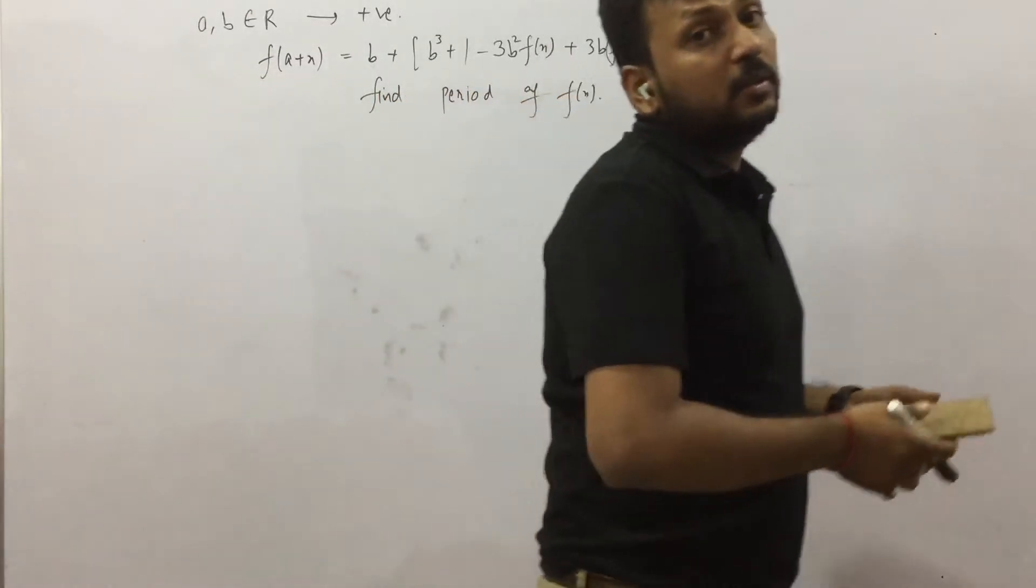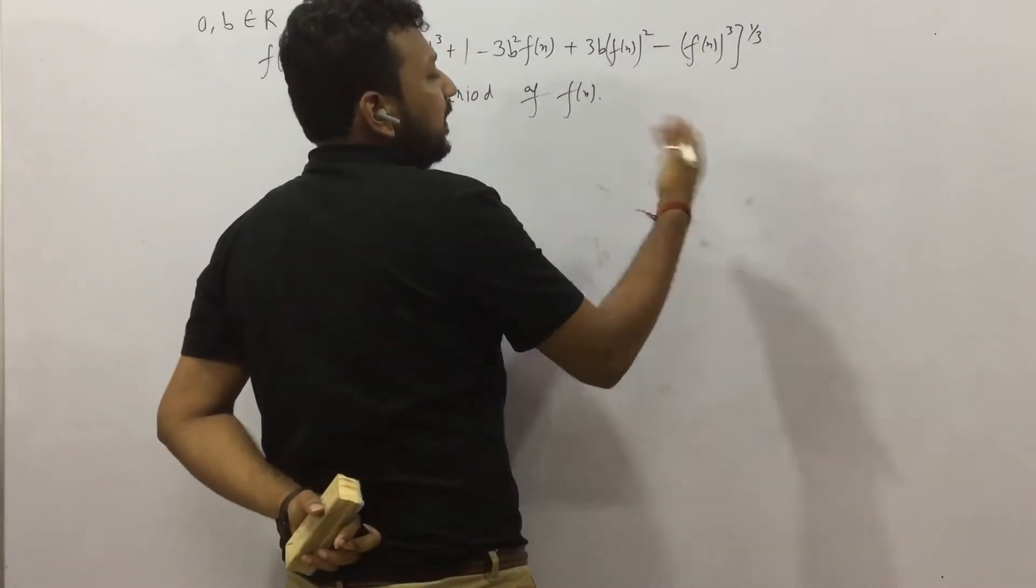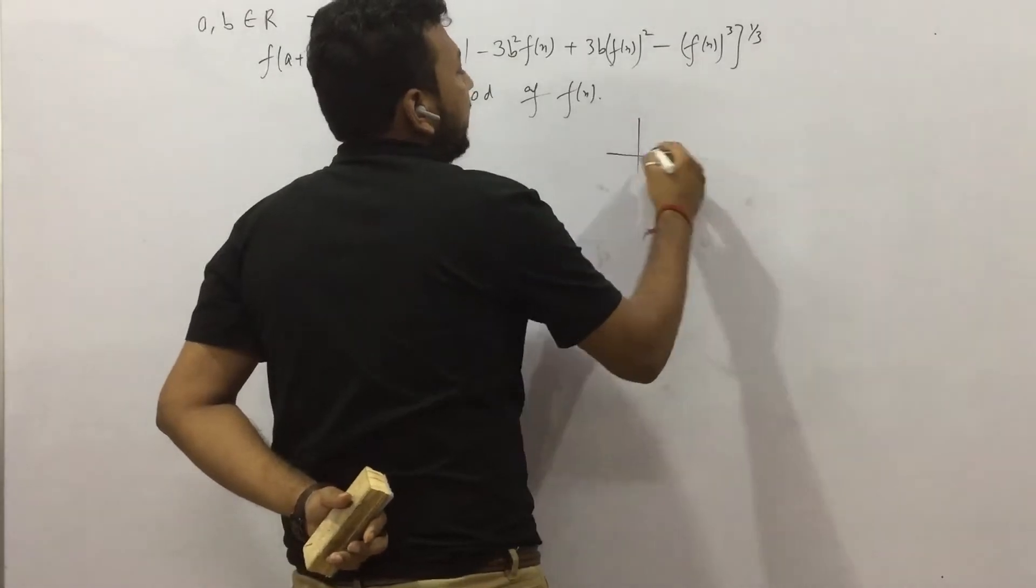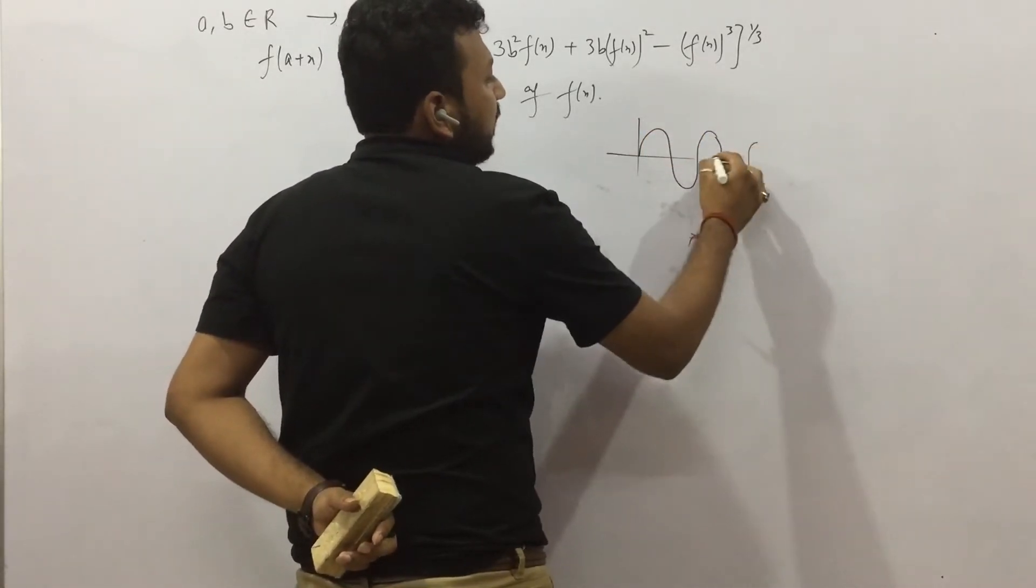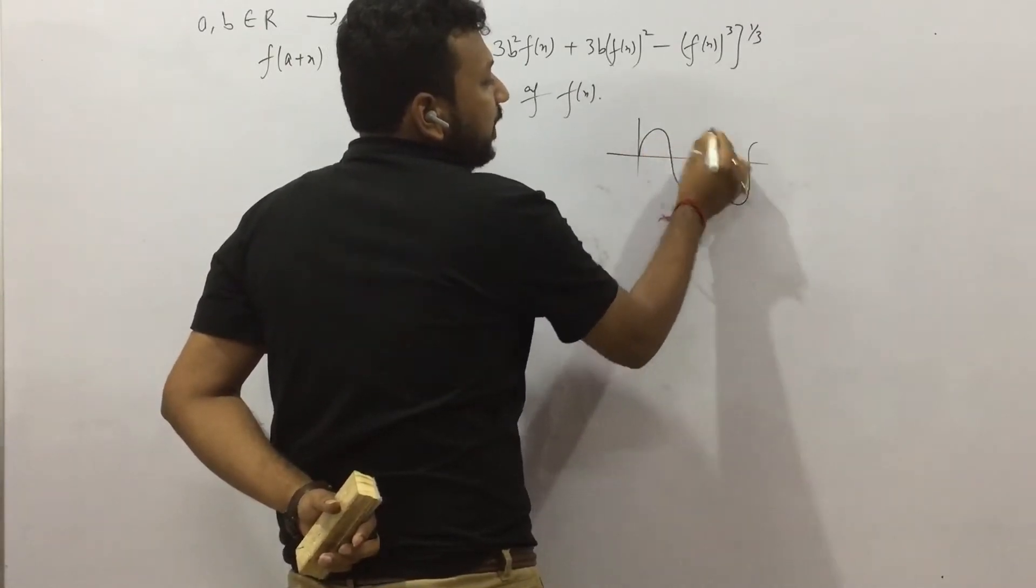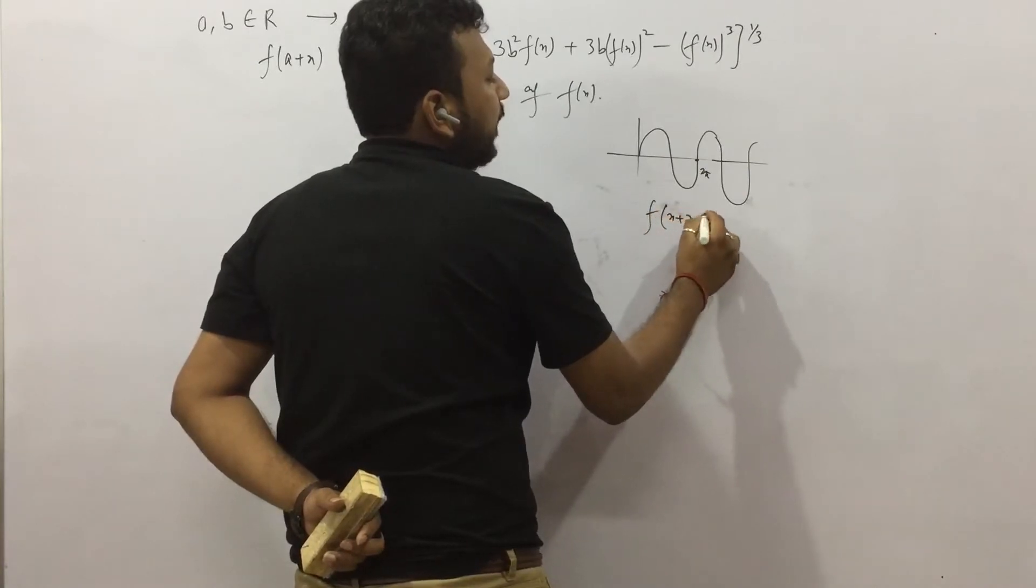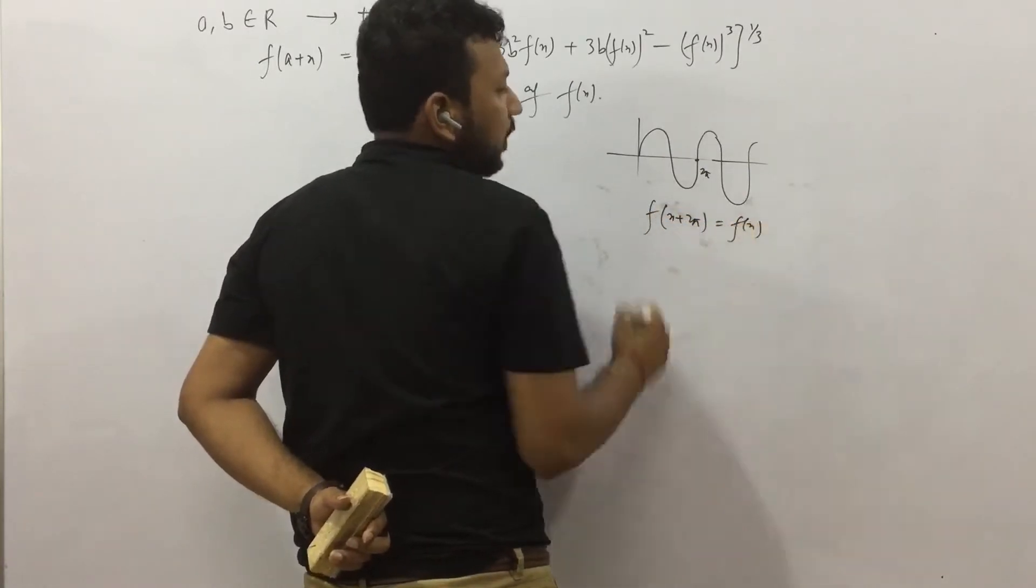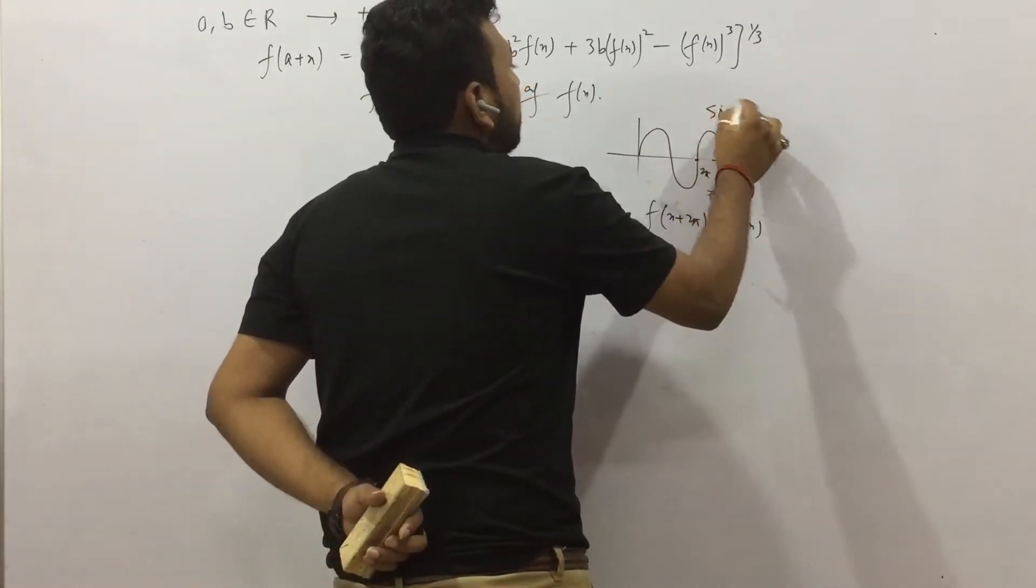First of all, we need to prove that this is periodic. I hope you know the meaning of periodic—it means which repeats itself after a certain interval. For example, you see sin(x). Sin(x) graph is like this. As you can see, after 2π, the graph repeats itself. That means I can write f(x + 2π) is equal to f(x) again. After 2π, the graph is repeating itself. So sin(x) is a periodic function.